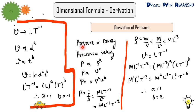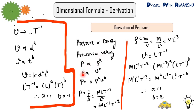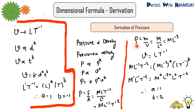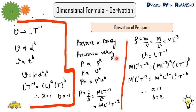Suppose pressure depends on density and velocity. We write P proportional to density raised to power A and P proportional to velocity raised to power B, where A and B are unknown. Replacing the proportionality signs with a constant K — which is dimensionless — gives P equals K times rho raised to power A times V raised to power B. Pressure is force divided by area: force has dimension M L T minus 2 and area is L squared, so pressure is M L minus 1 T minus 2. Density is mass over volume, giving M L minus 3, and velocity is L T minus 1.